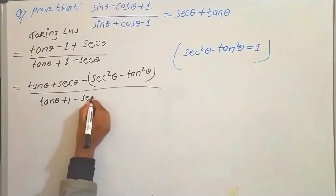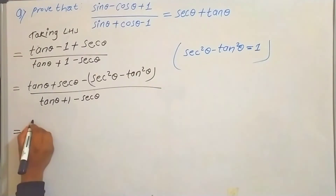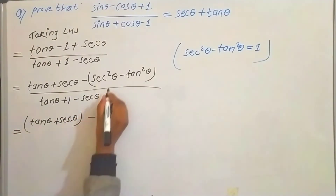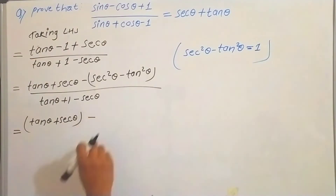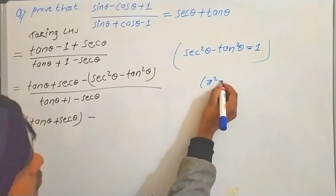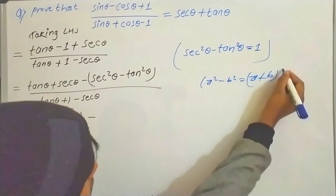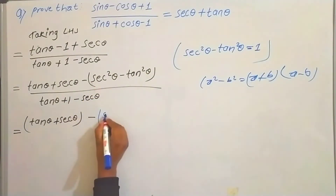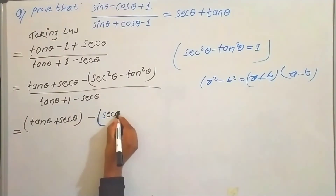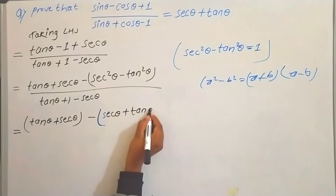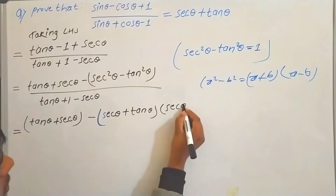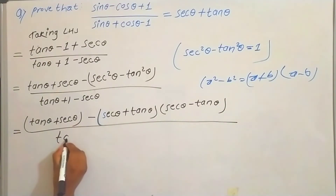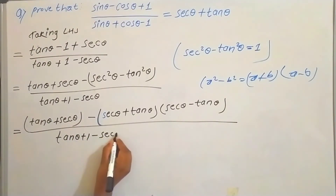So the numerator becomes tan θ + 1 − sec θ. Now notice that sec²θ − tan²θ is of the form a² − b², and a² − b² = (a + b)(a − b). We apply this formula to the denominator: tan θ + 1 − sec θ becomes (sec θ + tan θ)(sec θ − tan θ).